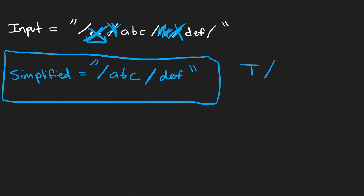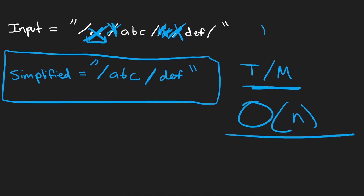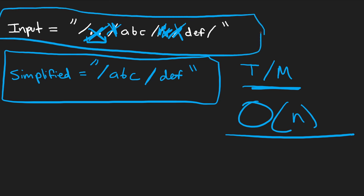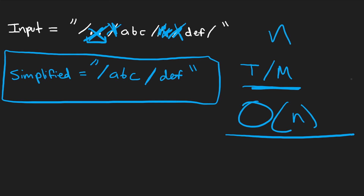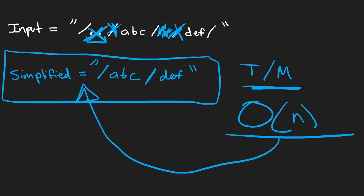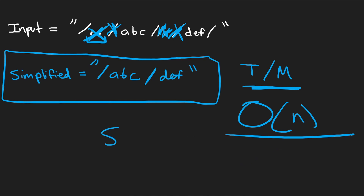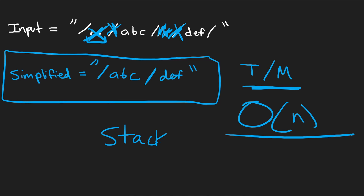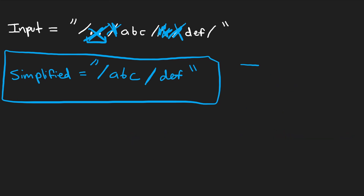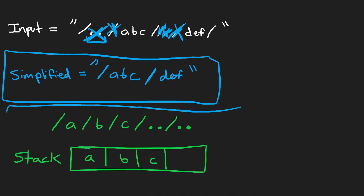The time and memory complexity is overall O(N) because we're scanning through the entire input string — that's O(N) time where the size of the string is N. We also technically need memory to create the simplified list. I'm going to be using a stack data structure in this problem, which I'll explain now.